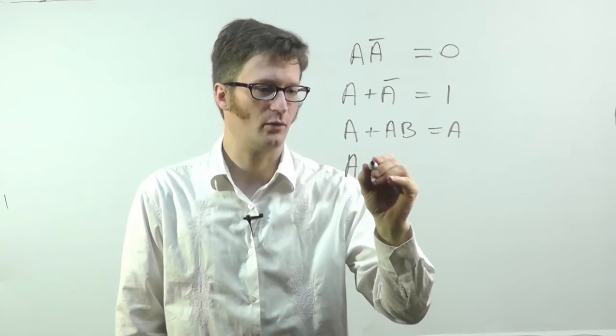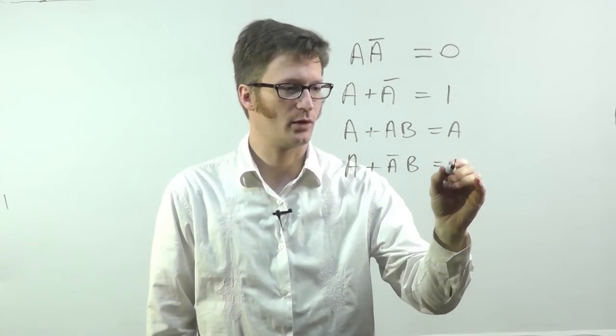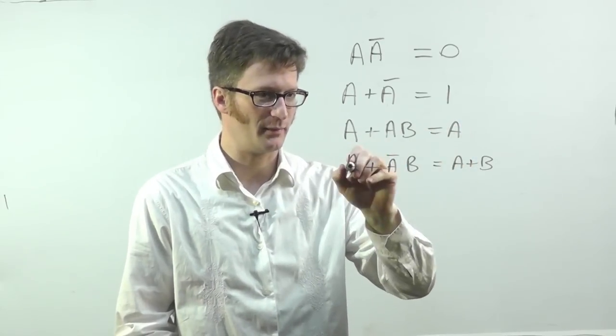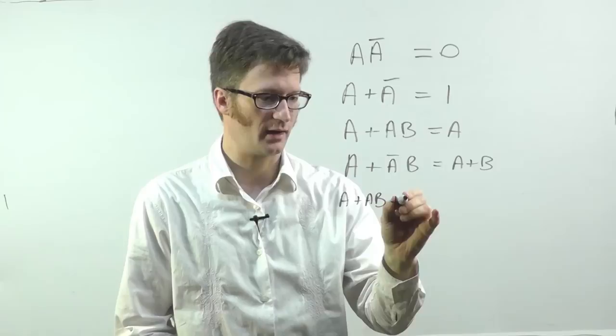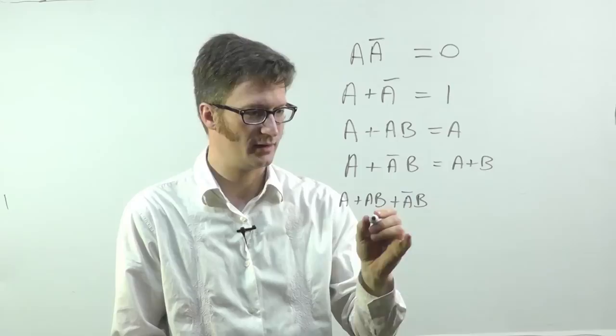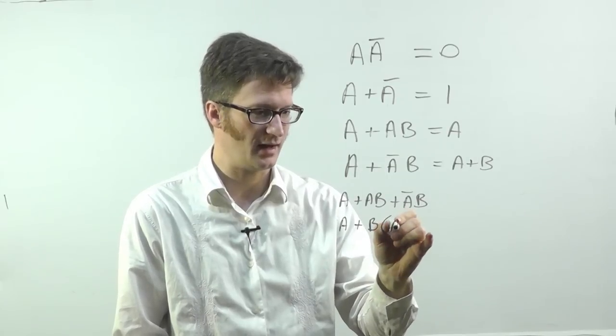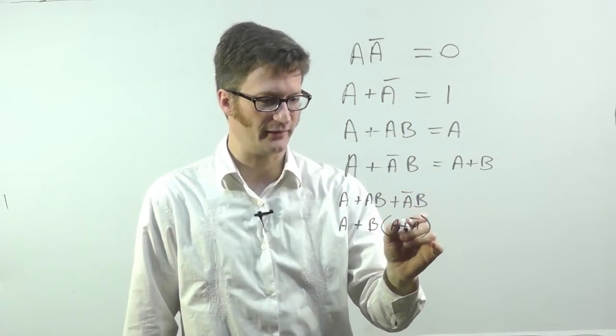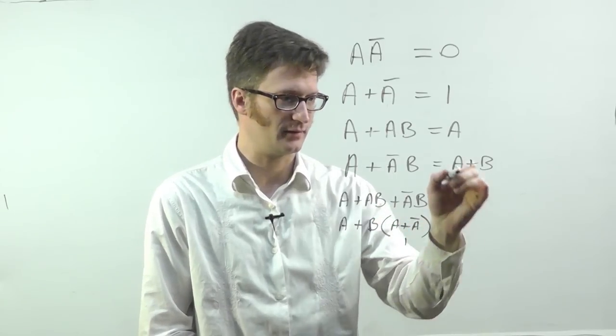Next, if I have A or A bar B, this one equals A or B. And the proof of that is, is I'm going to take this A here and swap it in for that one, giving me A or A B or A bar B. And then I can take and I can group this. So it's A or B times A or A bar. And A or A bar, right here, always evaluates to one. So B times one is B. So that equals A or B.